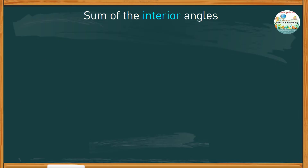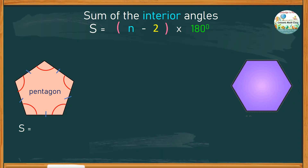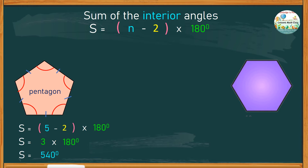2 times 180 degrees gives us a product of 360 degrees — again, as expected, the sum of the interior angles of any quadrilateral is 360 degrees. Let's try to find the sum of the interior angles of the given polygons below using the formula S equals N minus 2 times 180 degrees. Figure 1 has 5 equal sides and is called a pentagon. So S equals 5 minus 2, giving a difference of 3, multiplied by 180 degrees, which gives a product of 540 degrees.